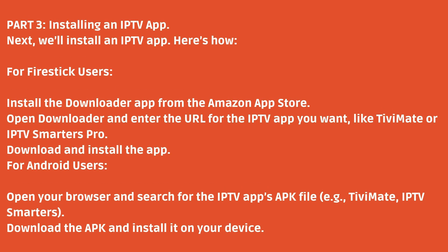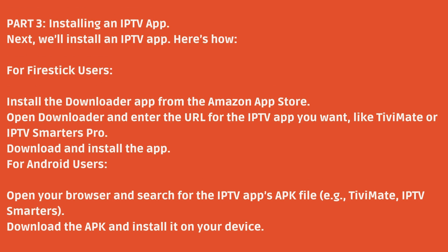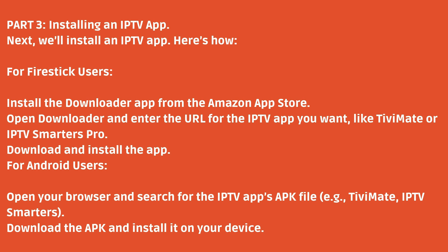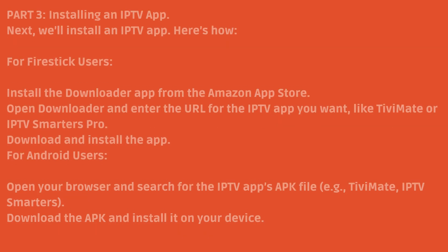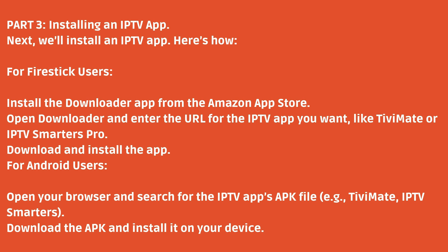Part 3: Installing an IPTV app. Next, we'll install an IPTV app. For Fire Stick users, install the Downloader app from the Amazon App Store. Open Downloader and enter the URL for the IPTV app you want, like Tivimate or IPTV Smarters Pro, then download and install the app. For Android users, open your browser and search for the IPTV app's APK file, e.g. Tivimate or IPTV Smarters, then download the APK and install it on your device.